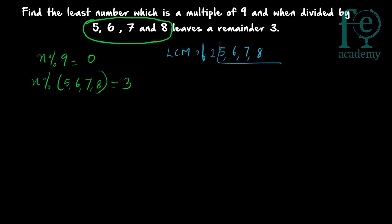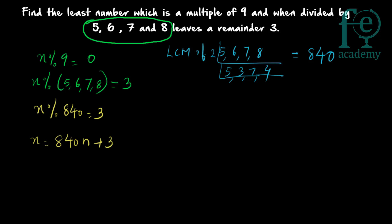Computing the LCM of 5, 6, 7, and 8: taking 2 as a common factor gives 5, 3, 7, and 4, then we get 5×3×7×4×2 = 840. So the LCM of 5, 6, 7, and 8 is 840. Therefore x modulus 840 = 3, meaning x = 840n + 3. Our aim is to find n.